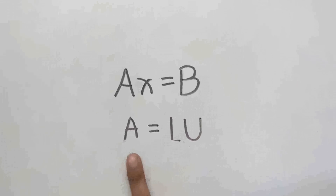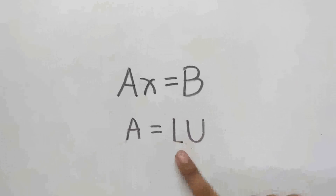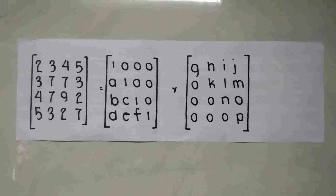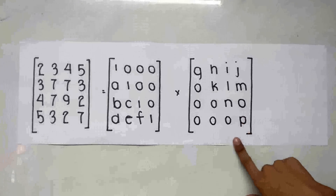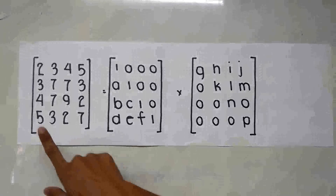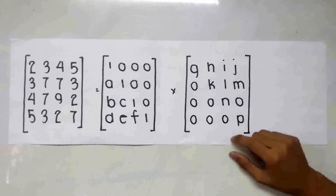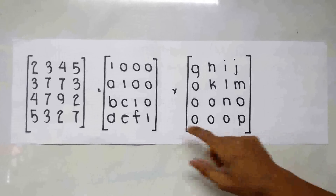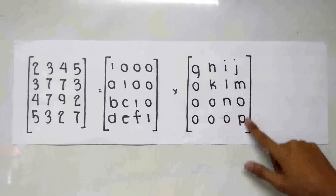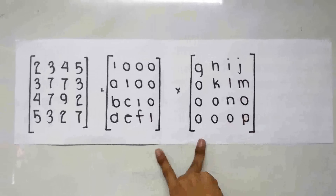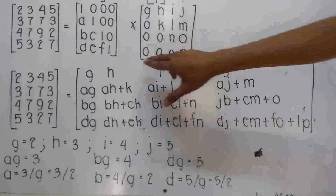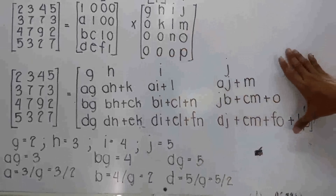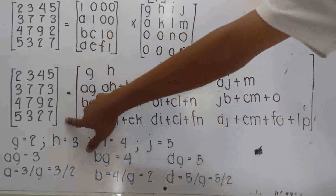Then, let A equal to the product of a lower triangular and an upper triangular matrix. Like this one here — this is the lower triangular matrix, this is the upper triangular matrix, and this is the coefficient matrix A. But we do not have the values for the variables yet, so we will try to solve for them by multiplying these two matrices. After multiplying them, we will get this matrix. We will now equate each of its elements into its corresponding elements.